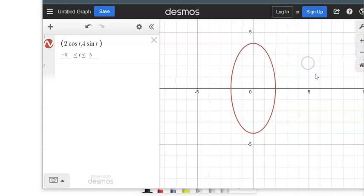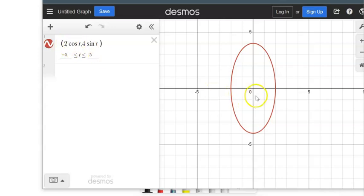Interestingly, we're not going to go too deep into this, but cosine is x, right? Sine is y. And notice this 2 is stretching it 2 in the x direction, and this 4 is stretching it 4 in the y direction.